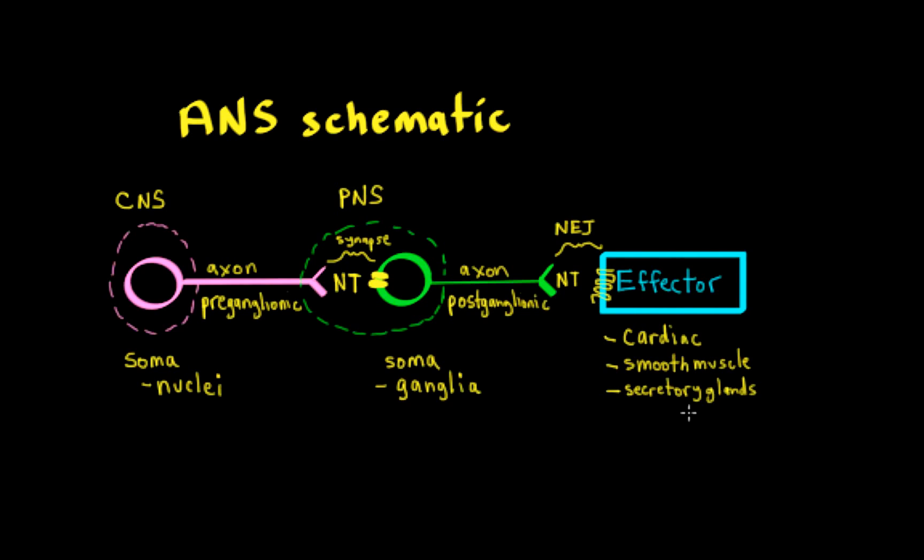And they're going to be getting a neurotransmitter from the postganglionic neuron to bind to a receptor that's of a seven-transmembrane-spanning type.